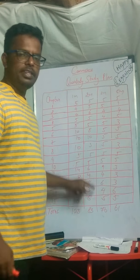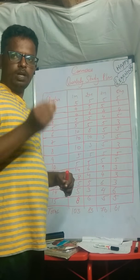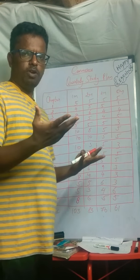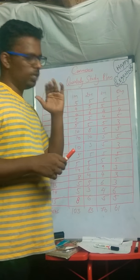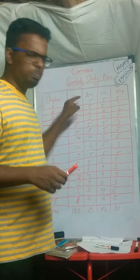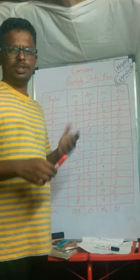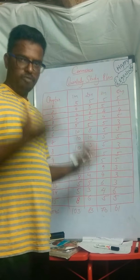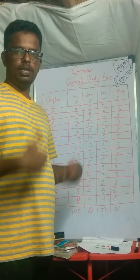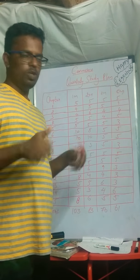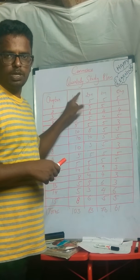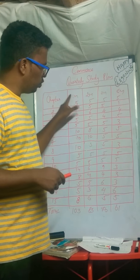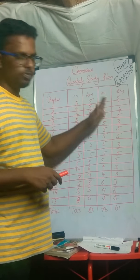There are 83 two-mark questions, and this is where the game is. When you write two-mark answers from the textbook content correctly, you will get very good confidence. If you are writing textbook content even in your own words, you will get your two marks perfectly. Our game for all theory subjects is: when you do one mark and two marks perfectly, you will get good marks in three marks and five marks as well.